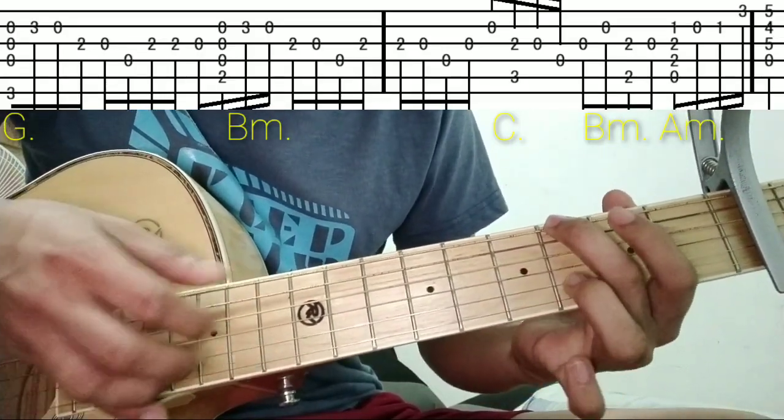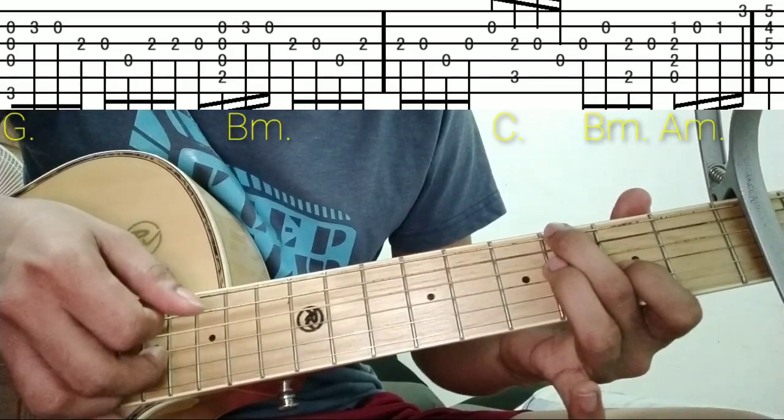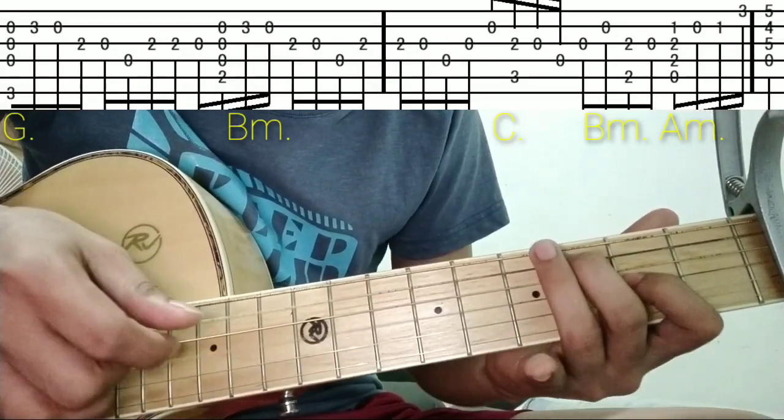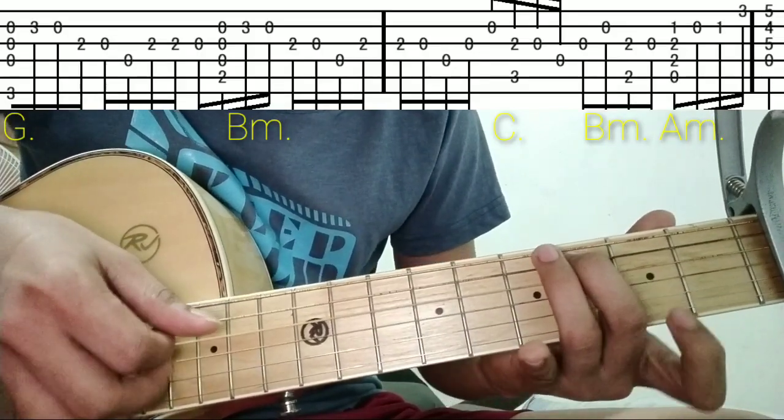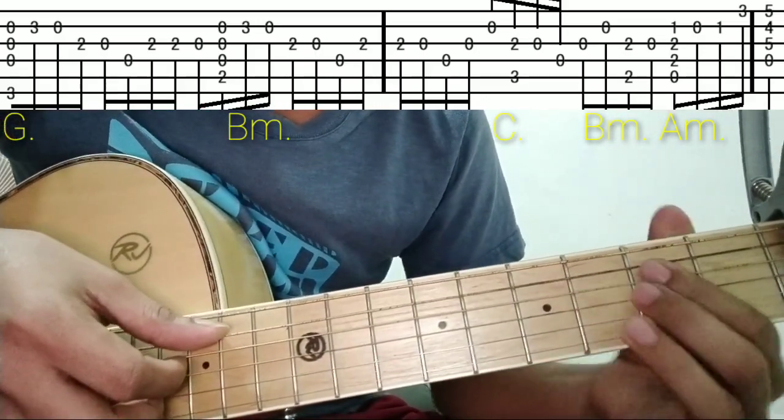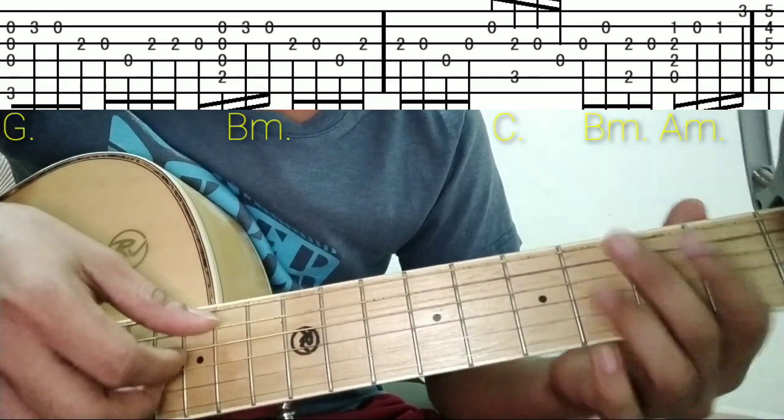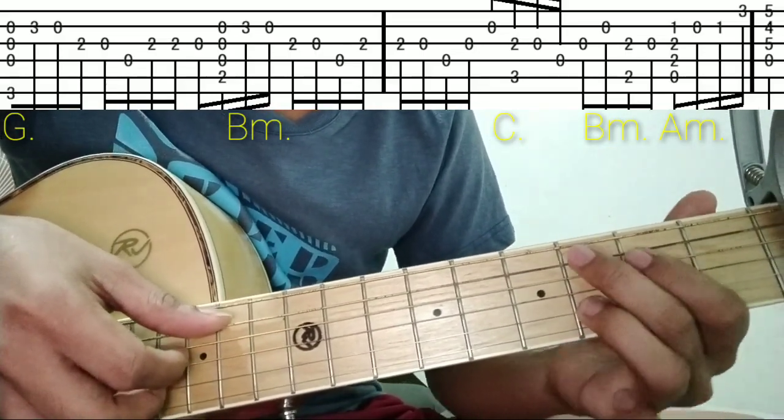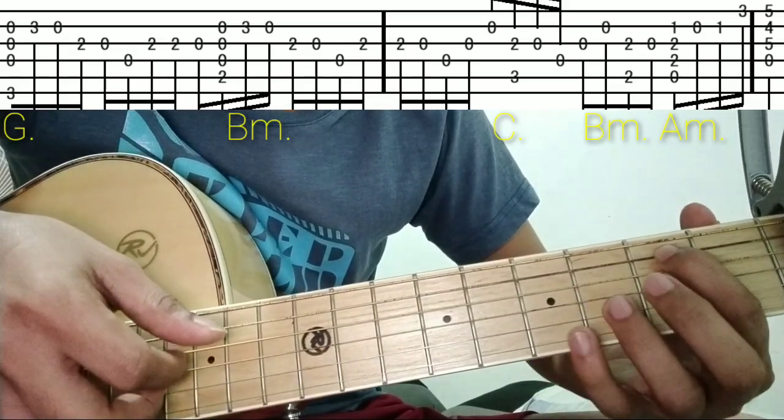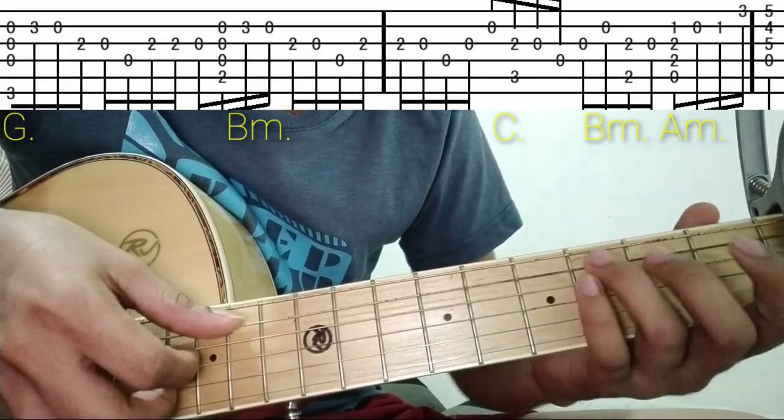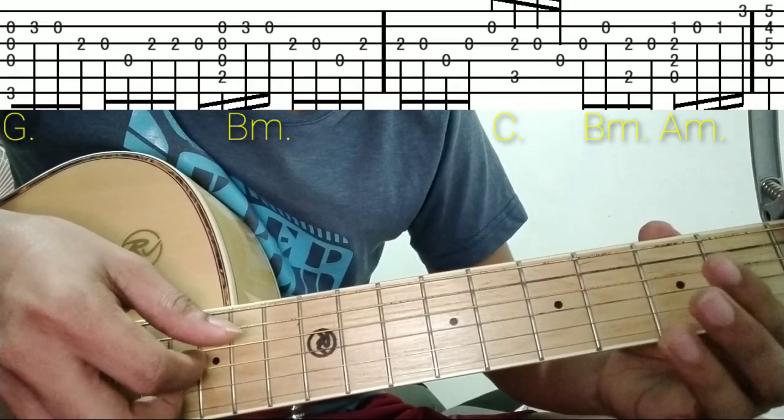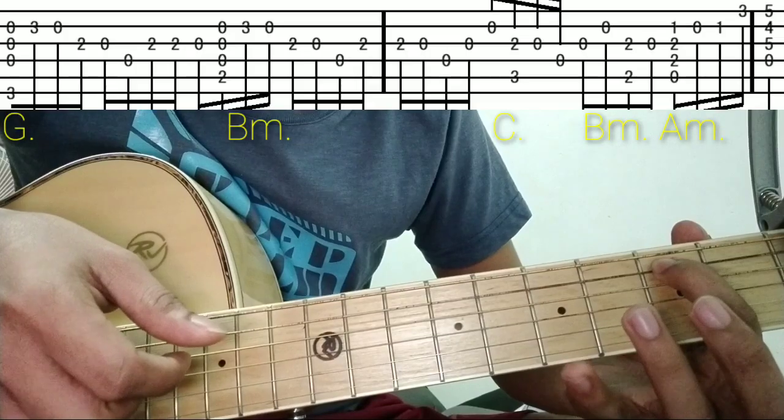Let's combine all three. That's it. Then B minor again. It's similar to C. The only difference is it becomes bass first. Like C. Same thing, just change the bass. That's it for B minor.